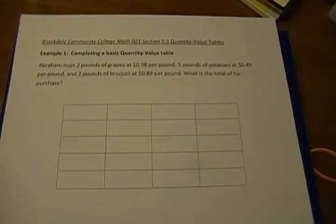So Abraham buys two pounds of grapes at 98 cents per pound, five pounds of potatoes at 49 cents per pound, and two pounds of broccoli at 89 cents per pound. What is the total of his purchase?